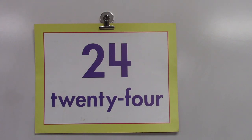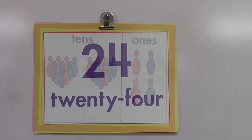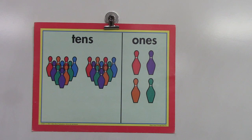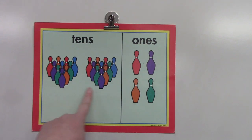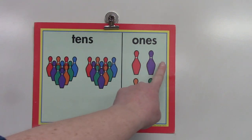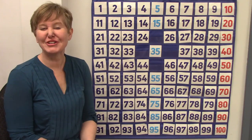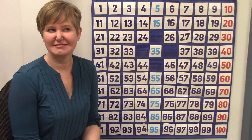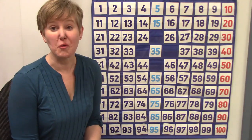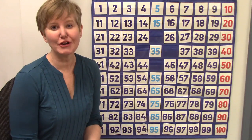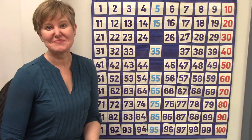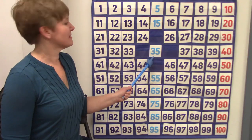Let's sing together: 2, 4, 6, 8, 10, 12, 14, 16, 18, 20, 22, and 24! The back of our card shows two groups of 10 and four ones: 10, 20, 21, 22, 23, 24. Now we're going to look at our 100s chart. Did you notice that there are four number tags missing? We're going to figure out what they are.